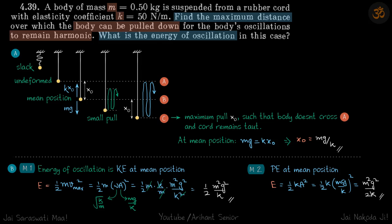We have a body of mass m that is suspended from a rubber cord. We need to find the maximum distance the body can be pulled down for the motion to remain harmonic and what is the energy of oscillation. Let's see the whole situation in diagram first and then we can see the calculation.